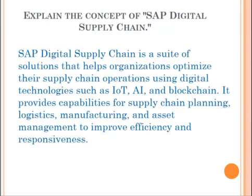Explain the concept of SAP Digital Supply Chain. SAP Digital Supply Chain is a suite of solutions that helps organizations optimize their supply chain operations using digital technologies such as IoT, AI, and blockchain. It provides capabilities for supply chain planning, logistics, manufacturing, and asset management to improve efficiency and responsiveness.